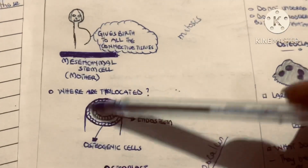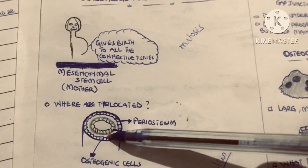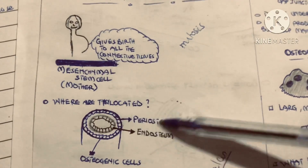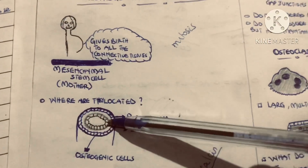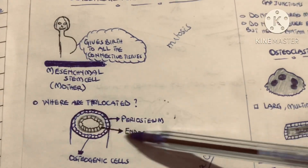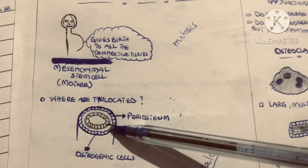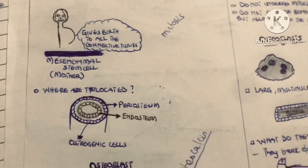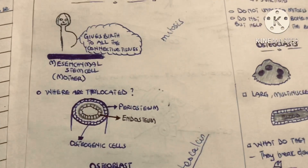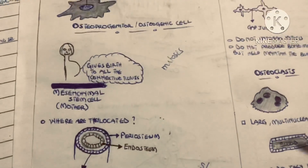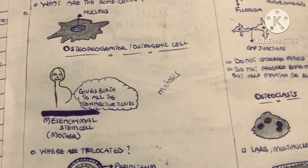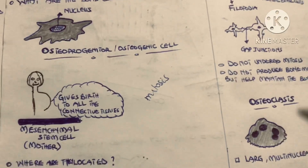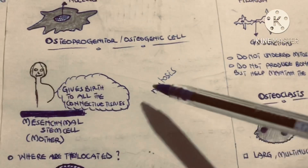Let's assume that this is a bone tissue. The outermost layer of the bone tissue is called the periosteum, and the innermost layer is called the endosteum. These layers are lined by the cells we call osteogenic cells. During bone formation, these osteoprogenitor cells undergo mitosis and differentiate into the next cell we are going to talk about.